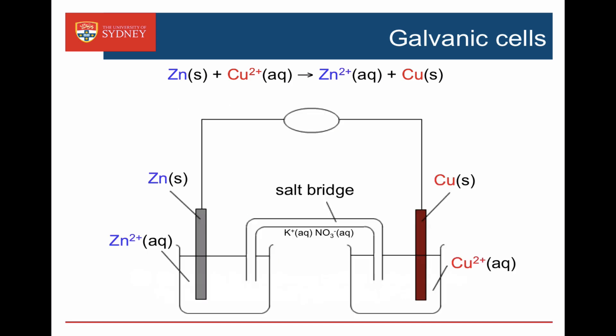Here's a typical cell. On the left-hand side we've got zinc metal in a solution of zinc ions, and on the right-hand side we've got copper metal in contact with copper ions. The two are connected with a wire, but also with a salt bridge that might contain something like potassium nitrate — potassium ions and nitrate ions. It's got a positive cell potential, it provides us with electricity, and we can use it as a battery.